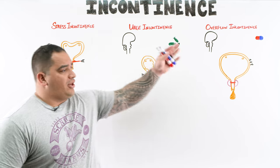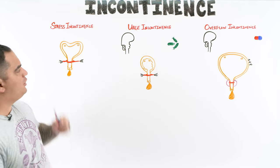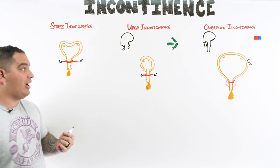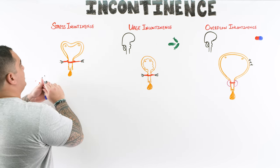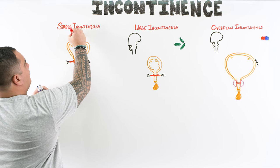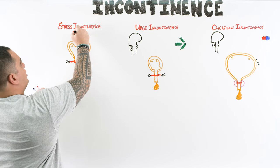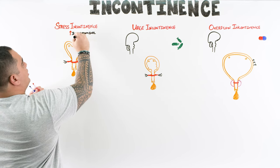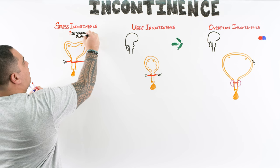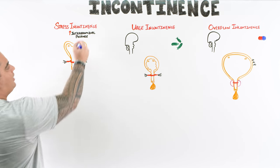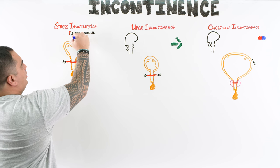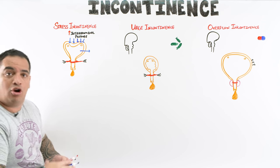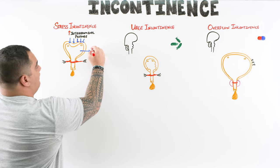In stress incontinence, the patient is having increased intra-abdominal pressure. That increased pressure compresses the bladder, and as a result, the pressure inside the bladder goes up.